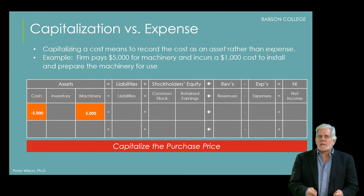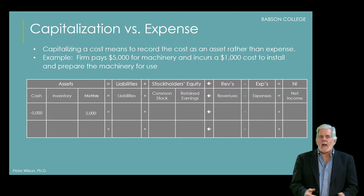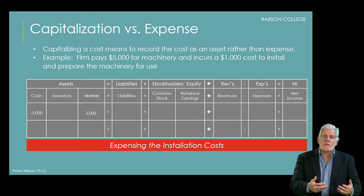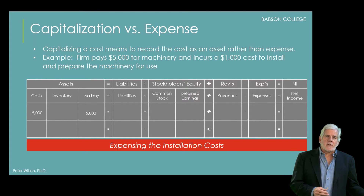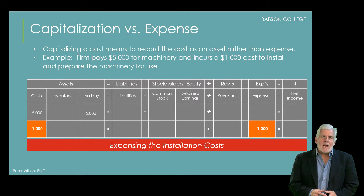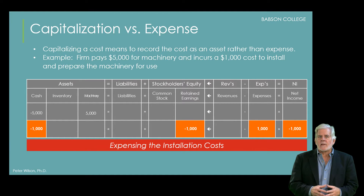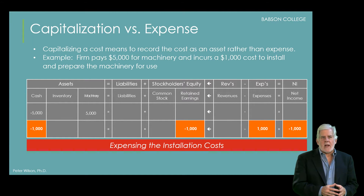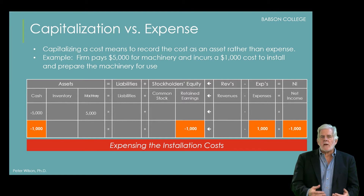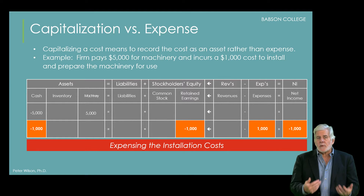The question really centers around how to handle the $1,000 of installation costs. One possibility would be to expense that $1,000 by recording it as you see here, with a $1,000 decrease to cash and a $1,000 expense on the income statement. However, the thinking is that this cost is more properly thought of as really part of the acquisition cost of the asset. The machinery won't do you any good if it's not properly installed and set up, so those costs are just as integral to buying the machine as the purchase price.